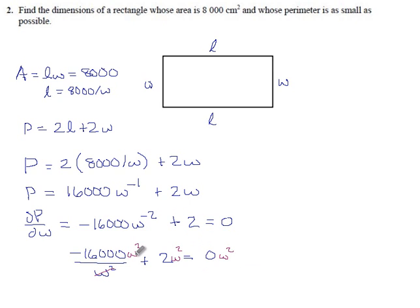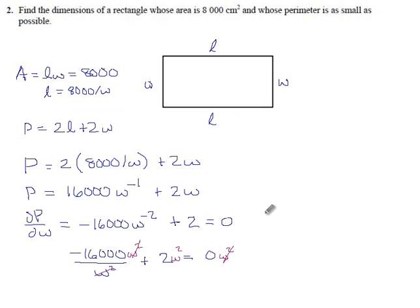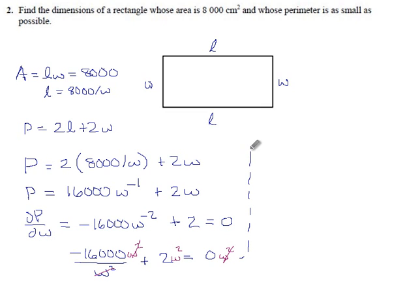First term, the W squareds cancel out. Second term, we get W squared. And third term, we get 0 times W squared, so it ends up not mattering. So after all that, we have minus 16,000 plus 2W squared equals 0.